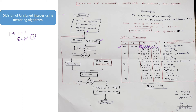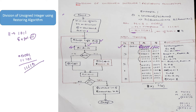We perform A minus M by computing A plus (minus M). A is currently 0 0 0 0 1, and minus M is 1 1 1 0 1. Adding these gives 1 1 1 1 0, so A minus M equals 1 1 1 1 0, and Q0 is still unknown. Now we check the first bit of A: it is 1. Since it is 1, we assign Q0 equals 0 and restore the value of A — copying back the value A had after shifting. N is now reduced by 1, giving N equals 3. Since N is not 0, we repeat the operation.